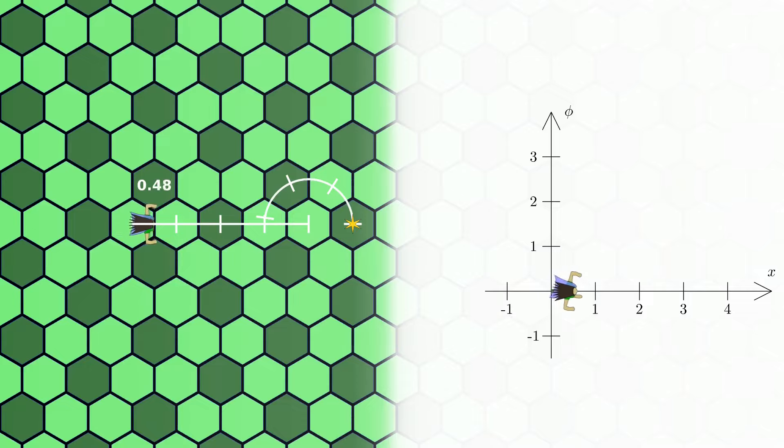When the princess moves one hexagon, she also moves by one unit in our space of motions. When she moves four hexagons, she of course moves four units.